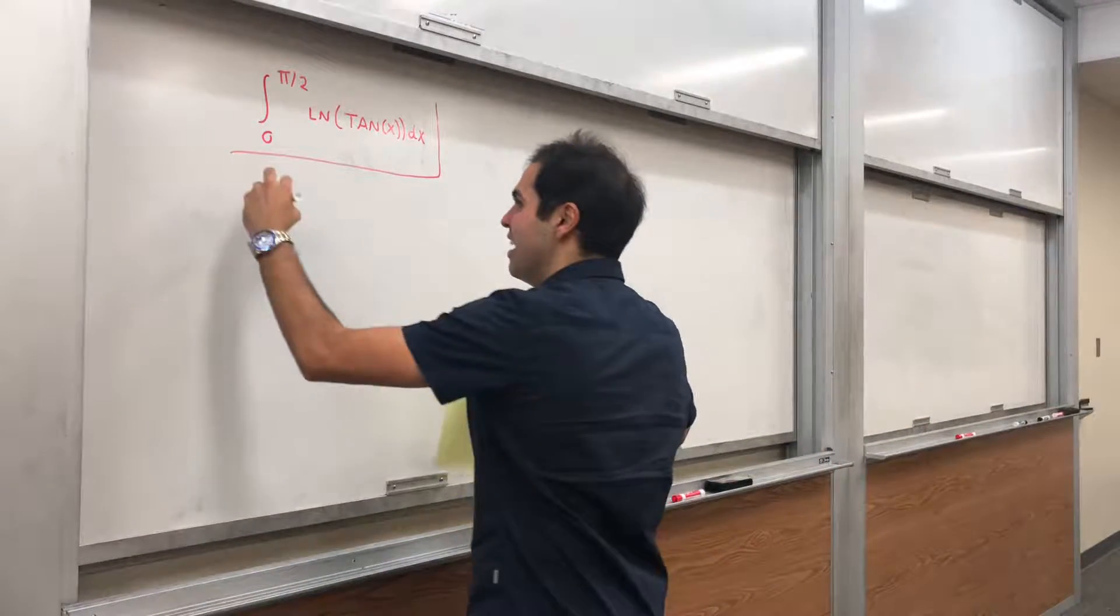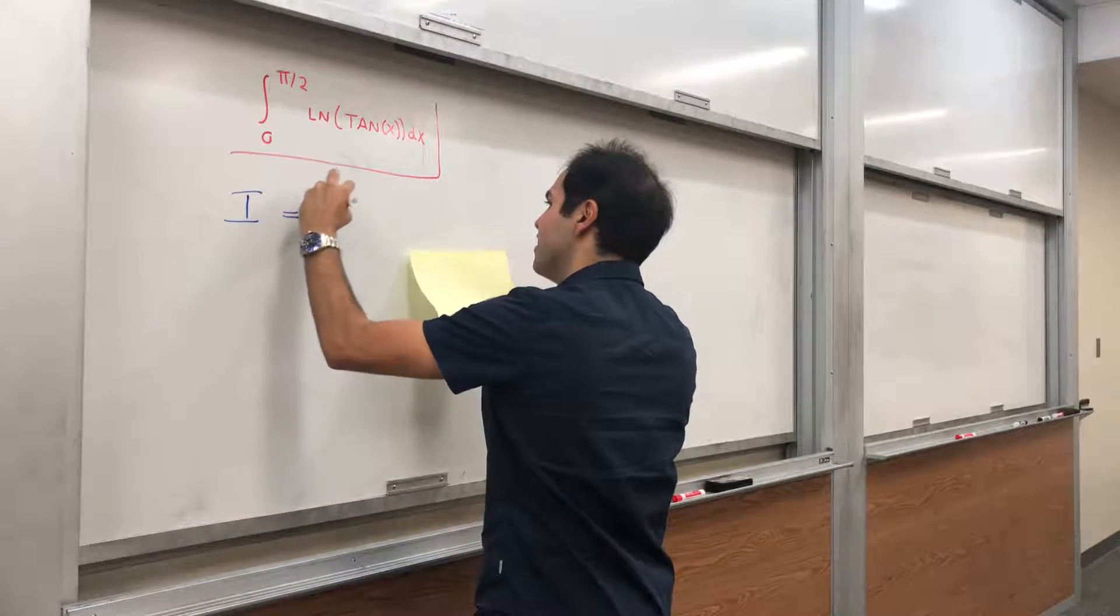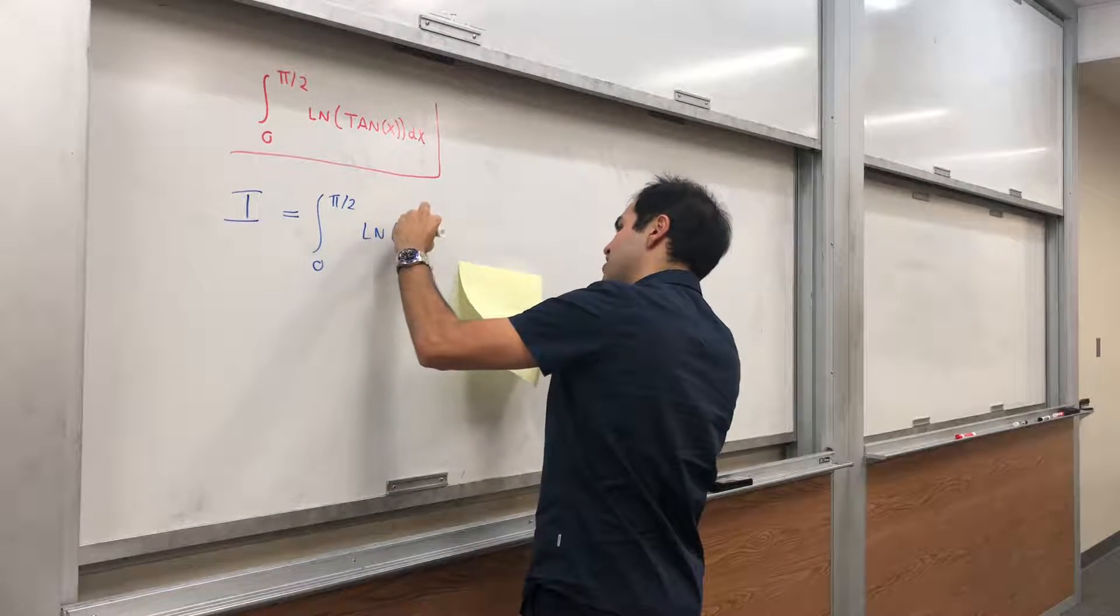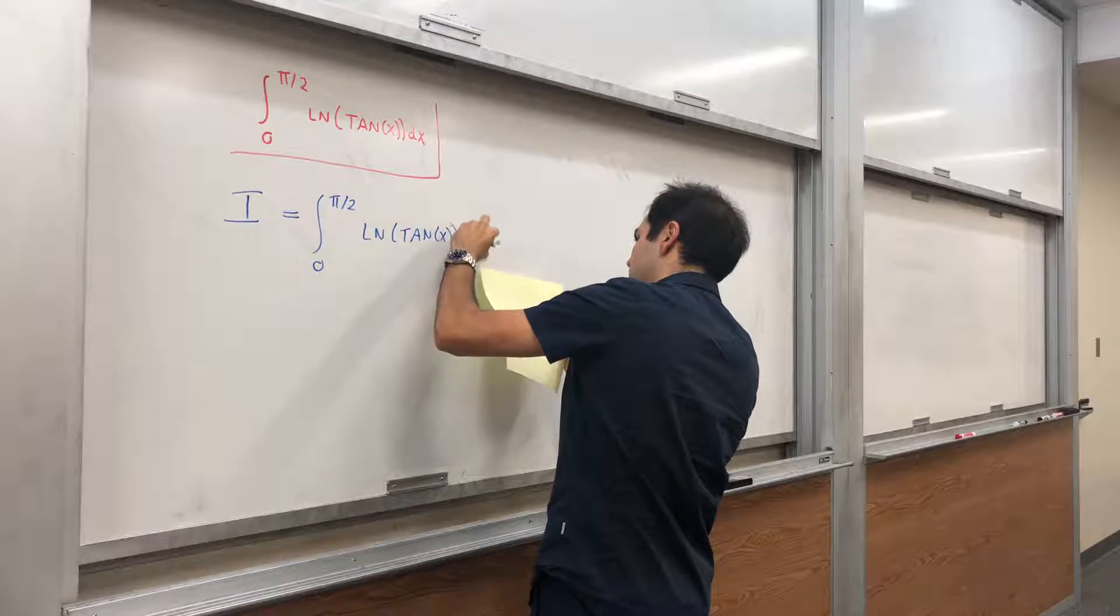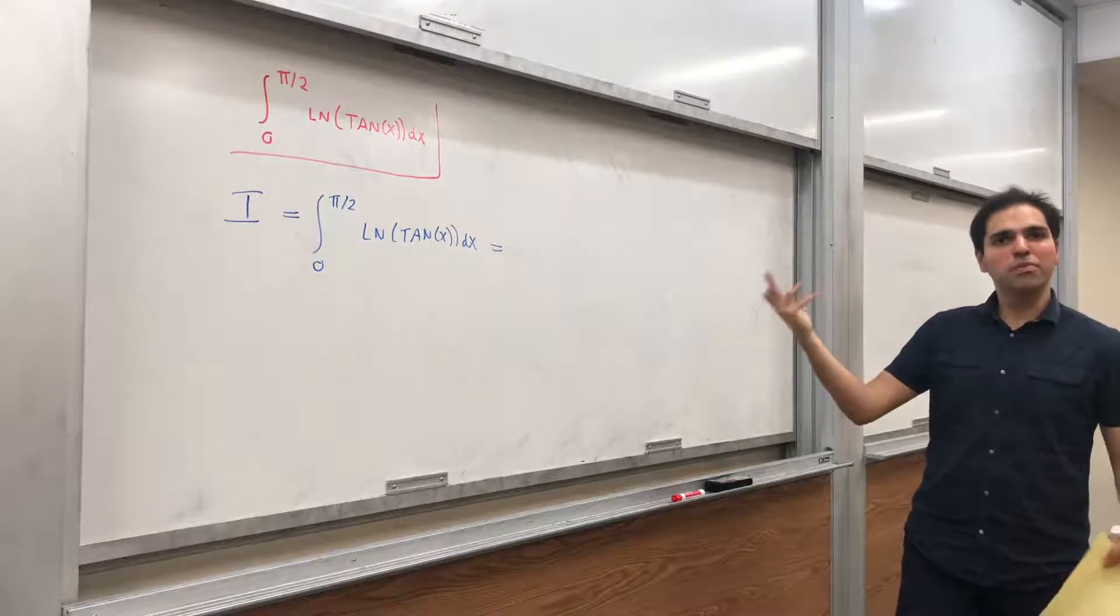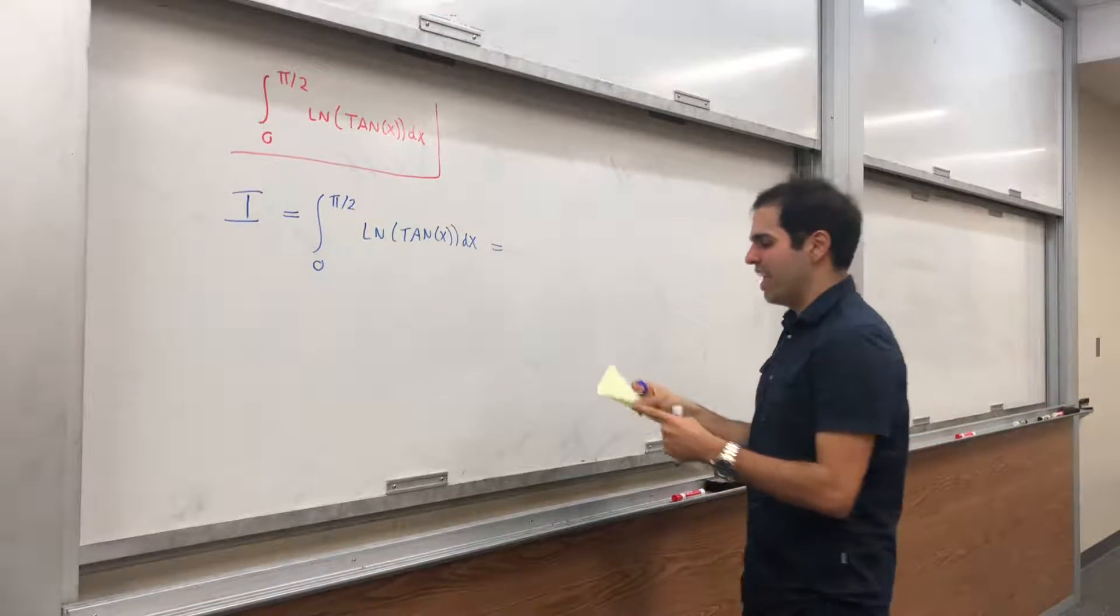Because simply let I be the integral from 0 to π over 2 of ln of tangent of x, then let's choose a little bit the symmetries of ln of tangent.